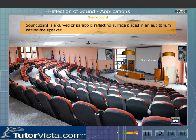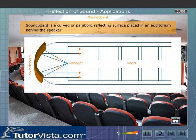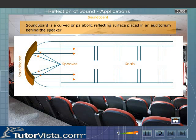A soundboard is a curved or parabolic reflecting surface placed in an auditorium behind the speaker. The source of sound, or the speaker, is located at the focus of the soundboard. The sound wave incident on the soundboard is reflected by it.